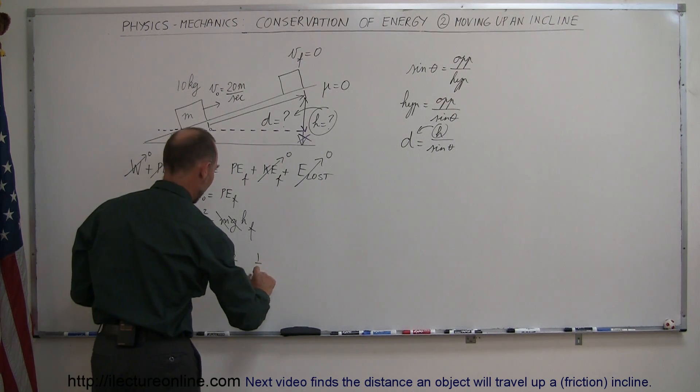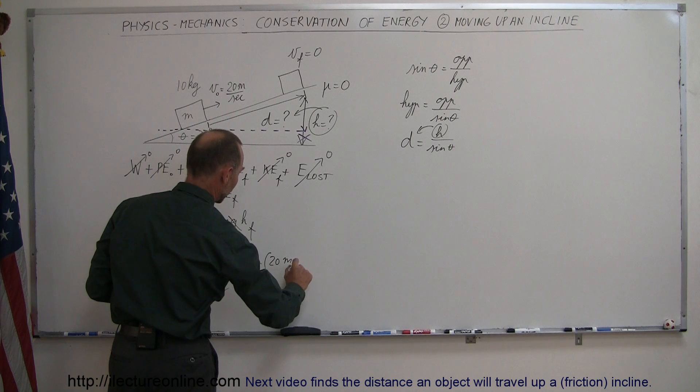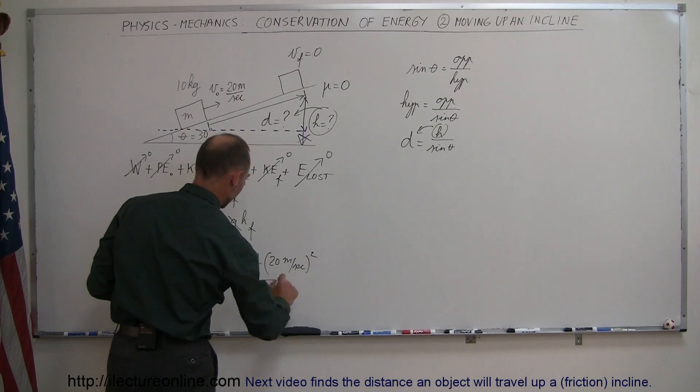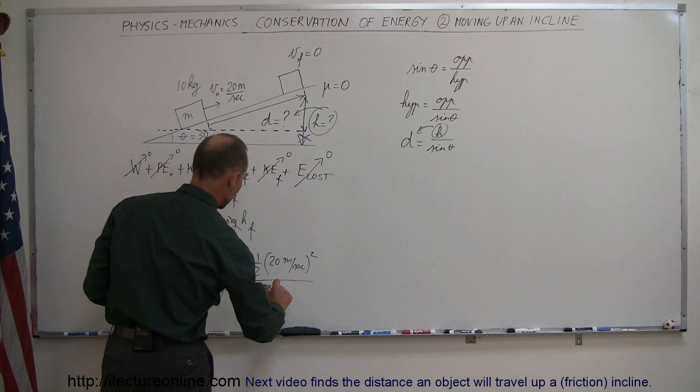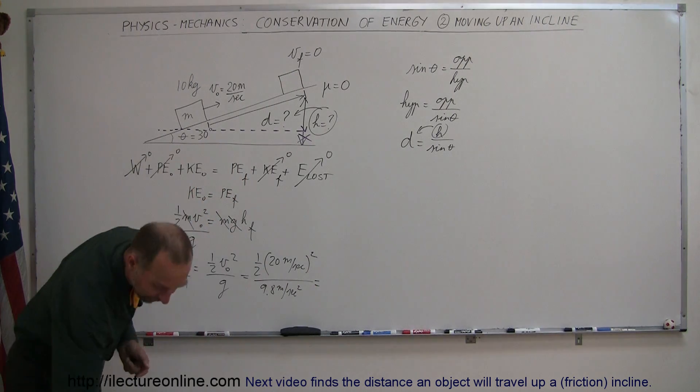If I plug in the numbers, I get one-half times the initial velocity, which is 20 meters per second, and I can square that, divided by g, which is 9.8 meters per second squared, and that will give us the final height.